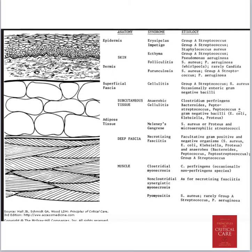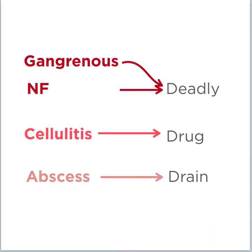This is a summary of the organisms that cause each pathology. If the patient has NF or gangrenous tissue, make sure they receive proper treatment. Of course, be aware of IV fluid management, IV antibiotics, and intubate if necessary. Thank you very much — hope you find this helpful.